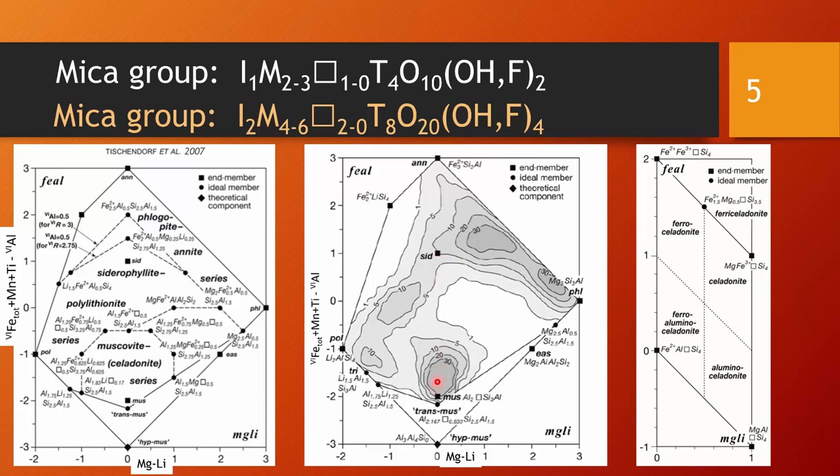Phlogopite-annite solid solutions, they would plot here along the tie line on the top right-hand side. Phlogopite is a very prominent member of mantle-derived rocks in the crust. You might find more iron-rich members, more annite-rich members, perhaps with some siderophyllite component.